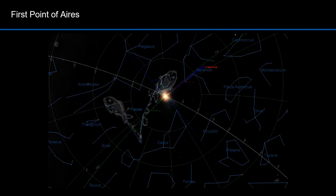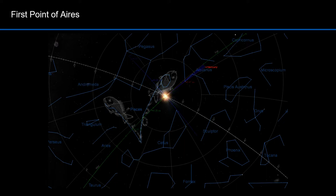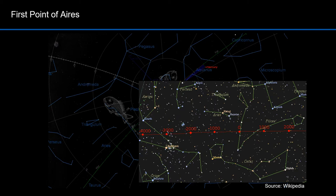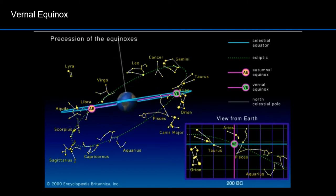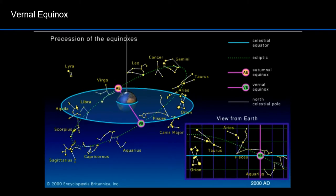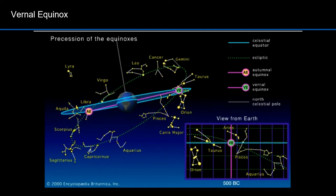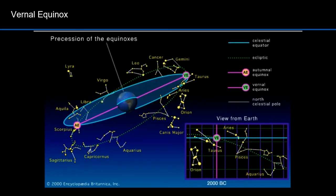The vernal equinox point, as seen from Earth, currently points to the constellation Pisces. It's referred to, ironically, as the first point of Aries. Here's another graphic that shows the precession of the vernal equinox point — it used to point to Aries and now points to Pisces. Many years ago this was called the first point of Aries and the name stuck. By the way, look carefully at this animation — the vernal equinox point will someday point to the constellation Aquarius. If you've seen the musical Hair, you're familiar with the song Aquarius, Let the Sun Shine In. The first song, Aquarius, has the line, 'This is the dawning of the age of Aquarius' — and this is what they were referring to.